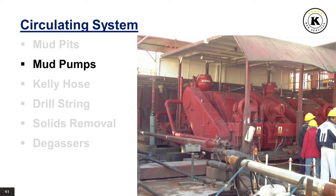Triplex pumps are usually single-acting, recognizable by having a valve system at one end only. Each cylinder is equipped with a removable sleeve or liner, and a pump has a whole range of interchangeable liners of different diameters, allowing different pressure/volume ranges with changing hole conditions. The smaller the liner diameter, the smaller the volume pumped per stroke, but more pressure is available due to thicker liner walls. There are usually two to three positive displacement plunger pumps on a drilling rig, available as duplex double-acting or triplex single-acting.